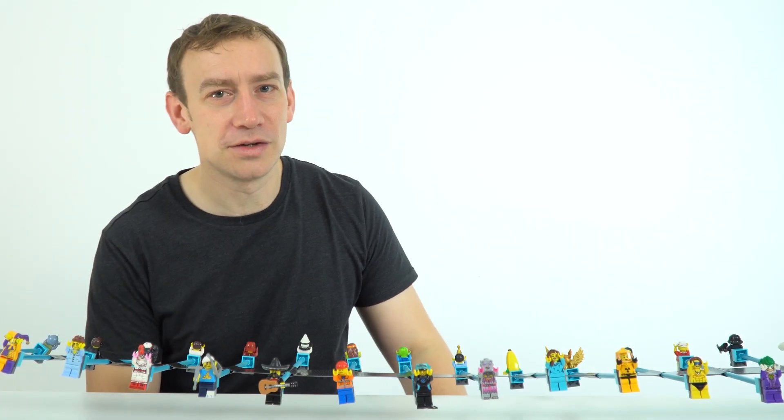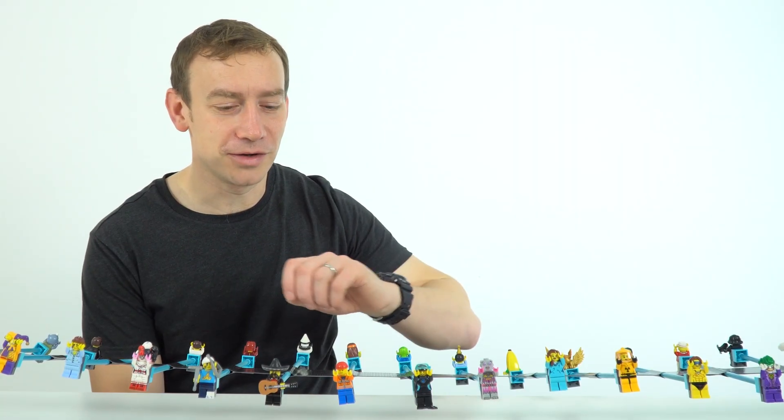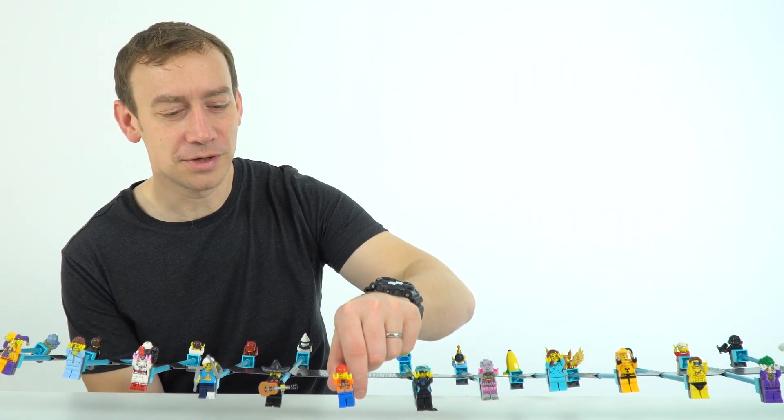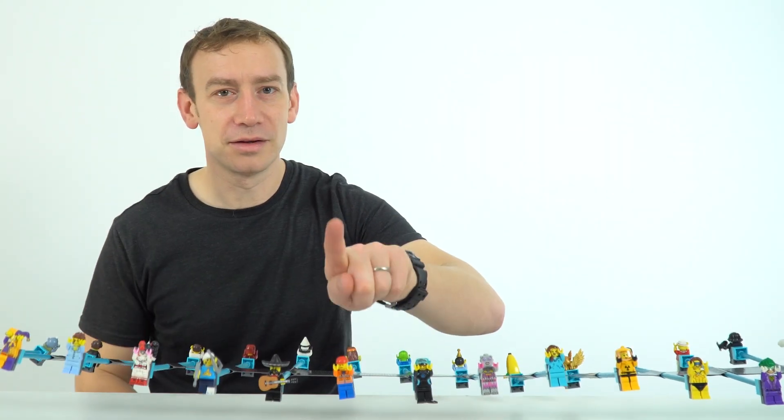There's another kind of wave which is called a longitudinal wave. Now this one here can't really show that. But a longitudinal wave, what would happen is that the people would be moving side to side rather than up and down.